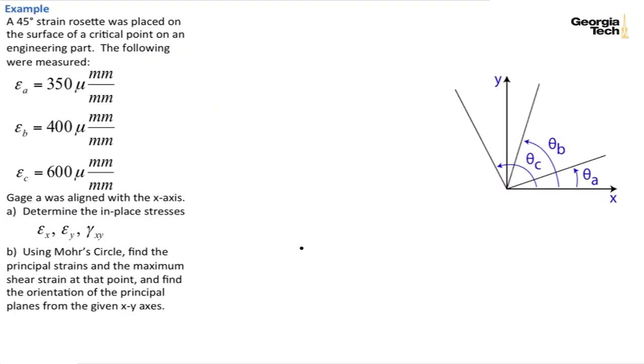So here's an example. I have a strain rosette. It's going to be a 45-degree strain rosette placed on the surface of a critical point of an engineering part, and we measured the following epsilon_a, epsilon_b, and epsilon_c normal strains. We want to determine the in-plane stresses in this module, and the next module we'll go ahead and use Mohr's circle to determine the principal planes and maximum in-plane shear strain.